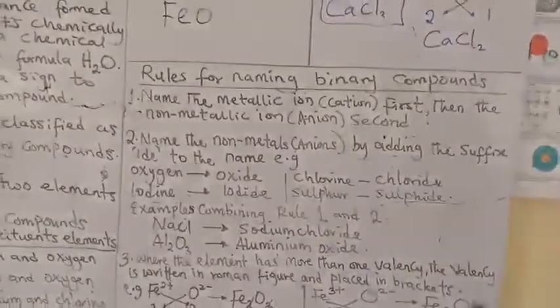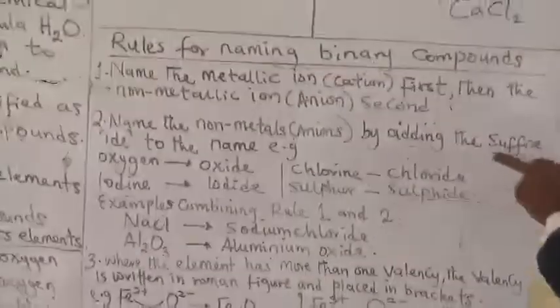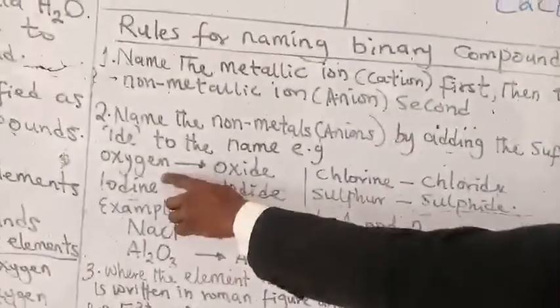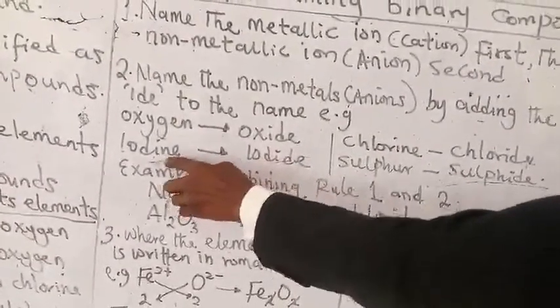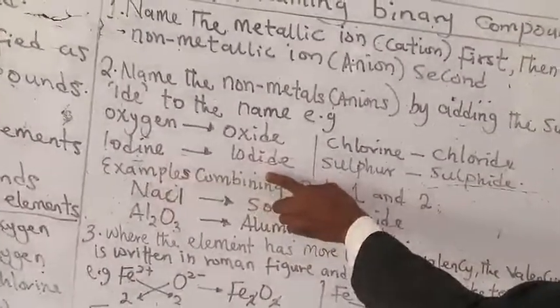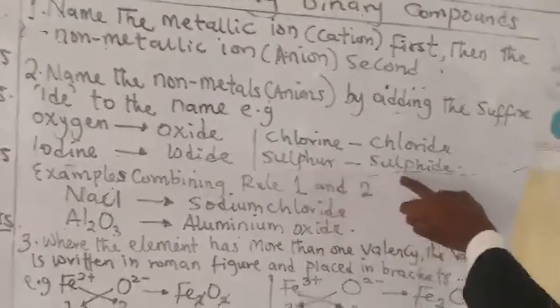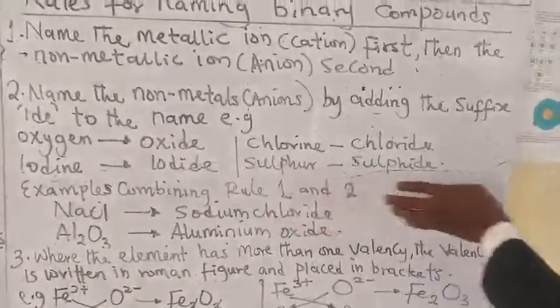Number 2, what you do is, you name the non-metals by adding the suffix IDE to the name. That means, for example, oxygen now, it becomes oxide. Iodine, I remove the I-N-E and replace it with I-D-E. For example, I remove this suffix and replace it with I-D-E.